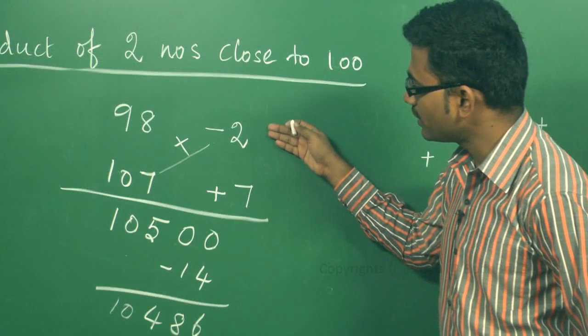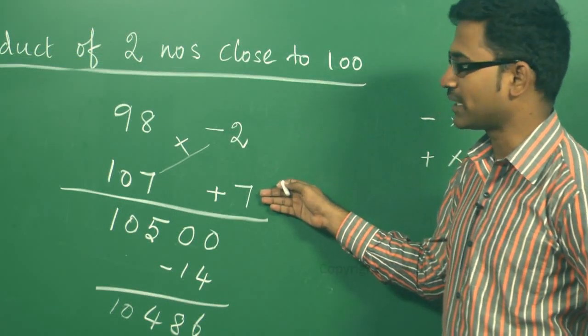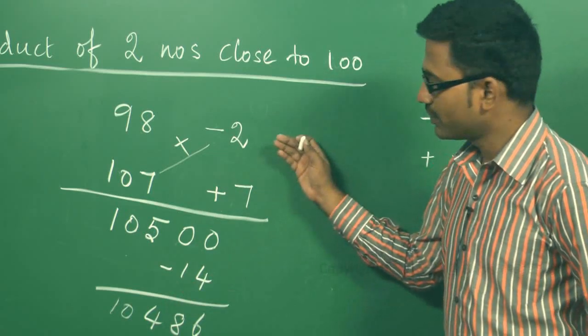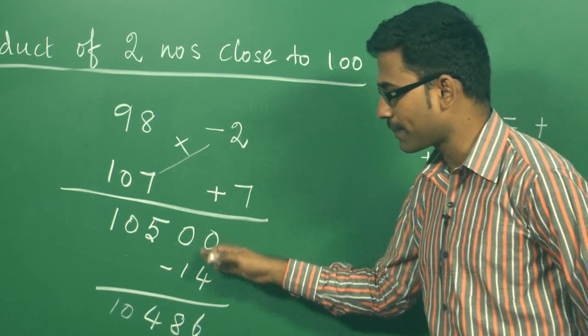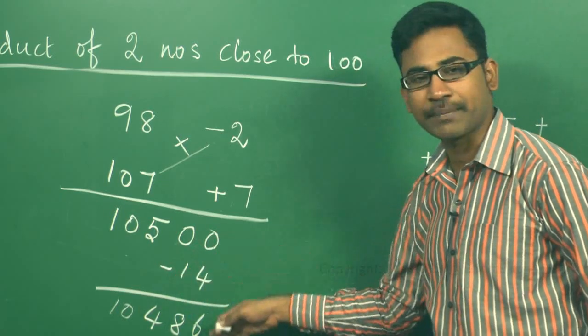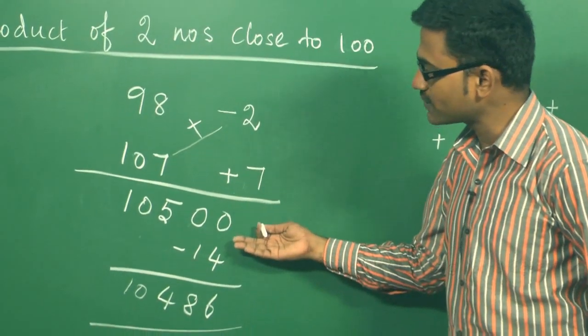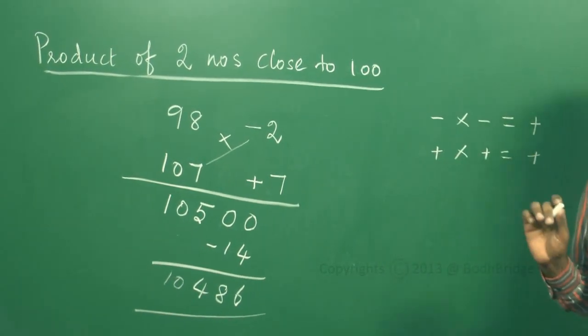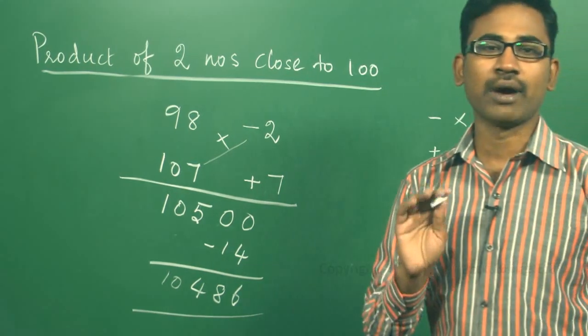That you have to take care of, because minus 2 and plus 7 we are multiplying, so we are getting minus 14. You should not add as plus 14. That is what you have to take care. Then you have to subtract. This is minus 14, so we are subtracting. Instead, if it was plus 14, you have to add it. So this is the procedure to calculate any two numbers product which is close to 100.